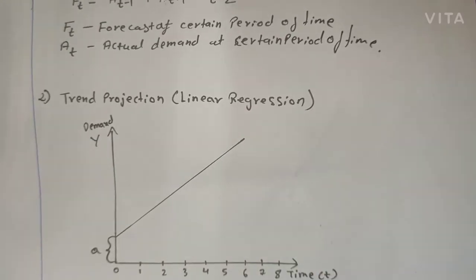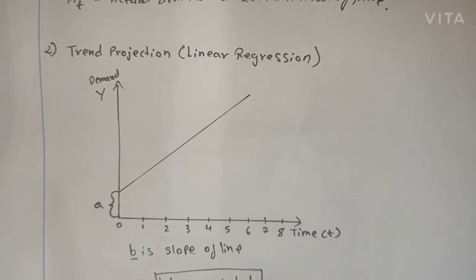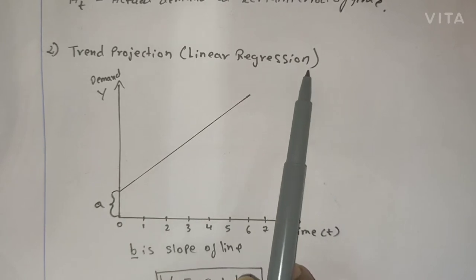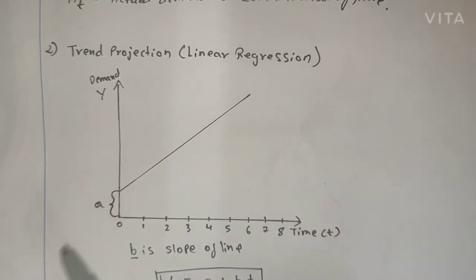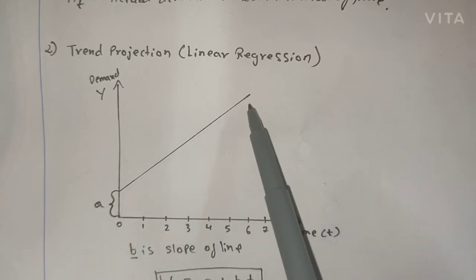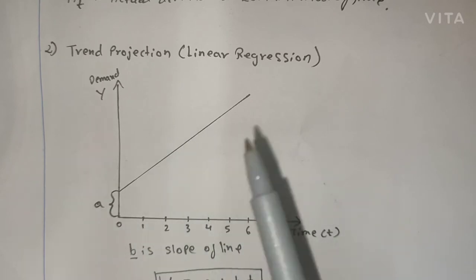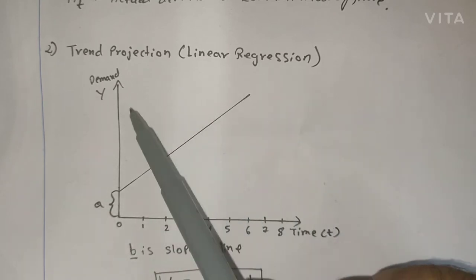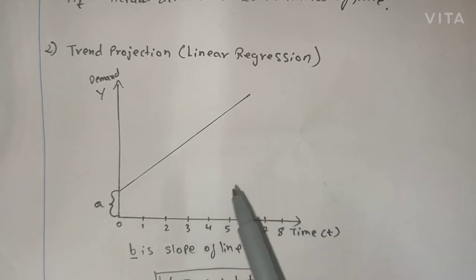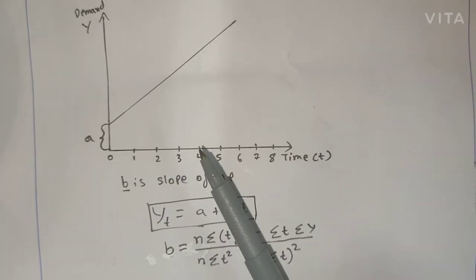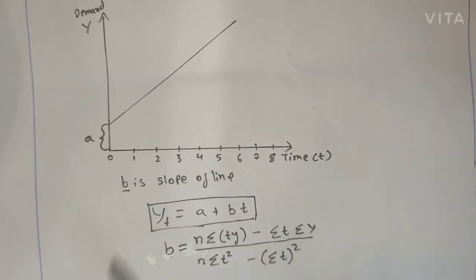The second method used to solve trend variation is Trend Projection, which is also called linear regression. In this method, there is a linear progression in demand — the trend is either going up or coming down. Since there is a linear trend, we need to find the slope of the line.